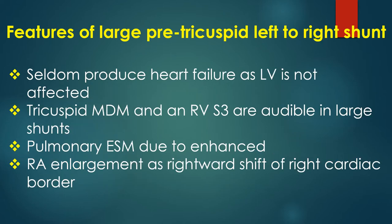Pre-tricuspid shunts seldom produce heart failure as the LV is not affected. Tricuspid diastolic flow murmur and an RV third heart sound are audible in case of large shunts. Pulmonary ejection systolic murmur due to enhanced flow is universal, and in fact more easily audible than the tricuspid flow murmur.